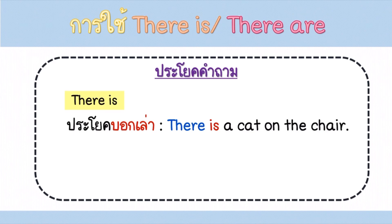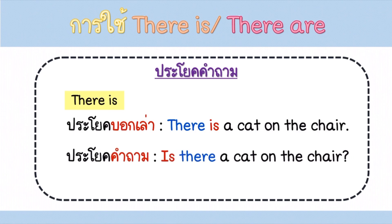ถ้านักเรียนสงสัยว่ามีแมวอยู่บนเก้าอี้ไหม นักเรียนสามารถแต่งเป็นประโยคคำถามได้ว่า Is there a cat on the chair? นักเรียนต้องขึ้นเสียงสูงตอนท้ายประโยคด้วยนะคะ คุณครูอ้นบอกว่าให้นำ Is มาไว้ข้างหน้า There ซึ่งสลับกันง่ายๆ แค่นี้เองค่ะ อย่าลืมว่าตัวอักษรแรกของประโยคต้องเป็นตัวพิมพ์ใหญ่นะคะ